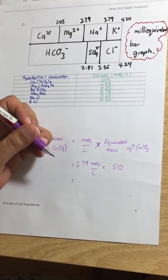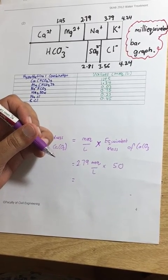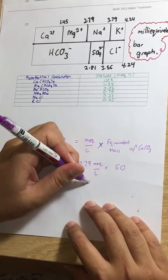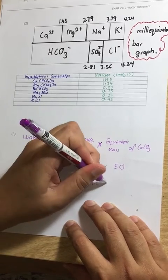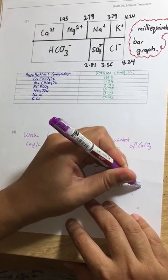And 2.79 times 50 equals 139.5 milligrams per liter as calcium carbonate.